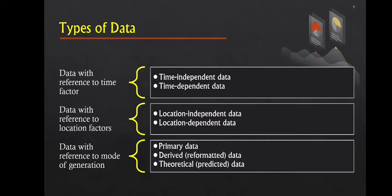The next type is data with reference to mode of generation. There are three types under this category: primary data, derived or reformatted data, and theoretical or predicted data. Primary data is collected from an experiment or observation designed for the purpose of calculation, such as a velocity value derived from length and time measurements.